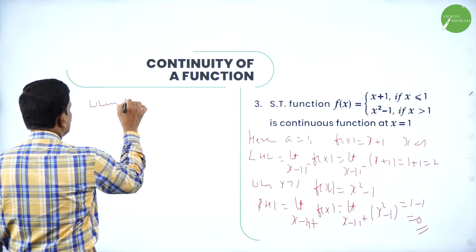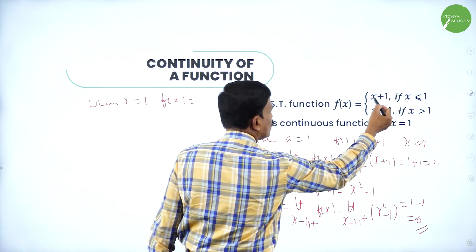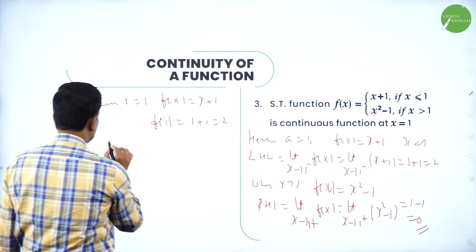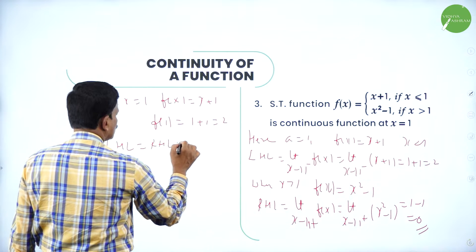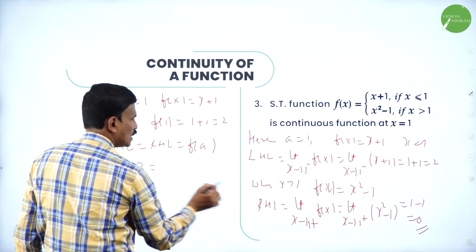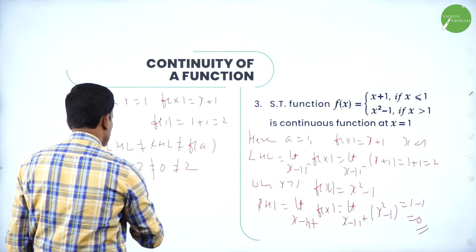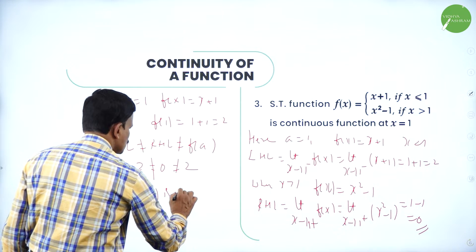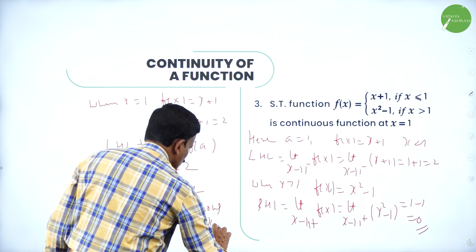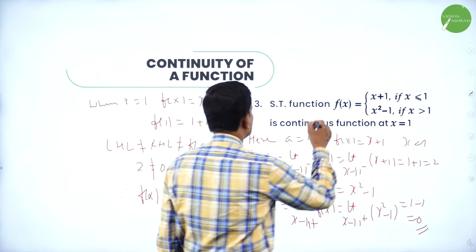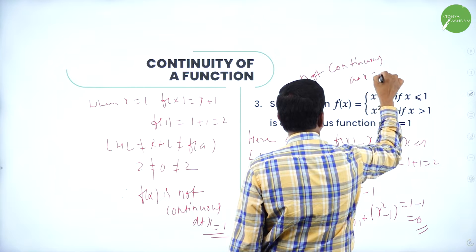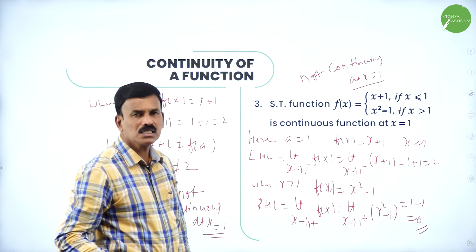Functional value: when x = 1, f(x) = x + 1, so f(1) = 1 + 1 = 2. Comparing: LHL = 2, RHL = 0, functional value = 2. Since LHL (2) ≠ RHL (0), the function f(x) is not continuous at x = 1 — it is discontinuous.